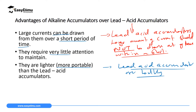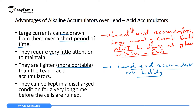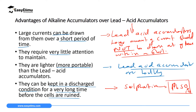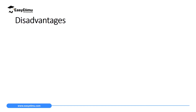The fourth advantage is that alkaline accumulators can be kept in a discharged state for a very long time before their cells are ruined. This is opposite to lead acid accumulators, where leaving them discharged for a long time causes a process called sulfation, in which lead sulfate hardens and destroys the plates. With alkaline accumulators, you can recharge them after a long discharged period and they will function normally.